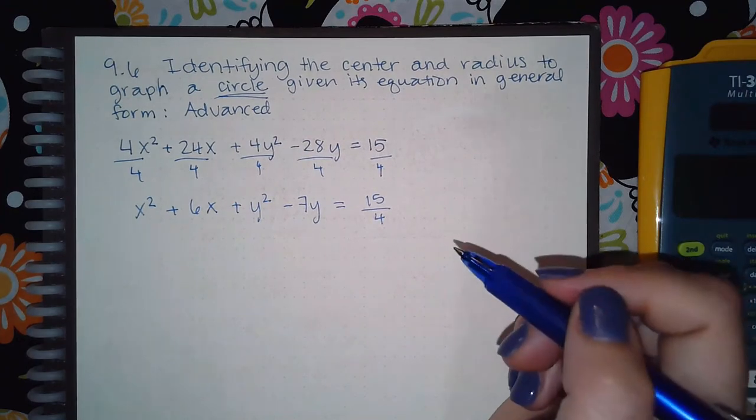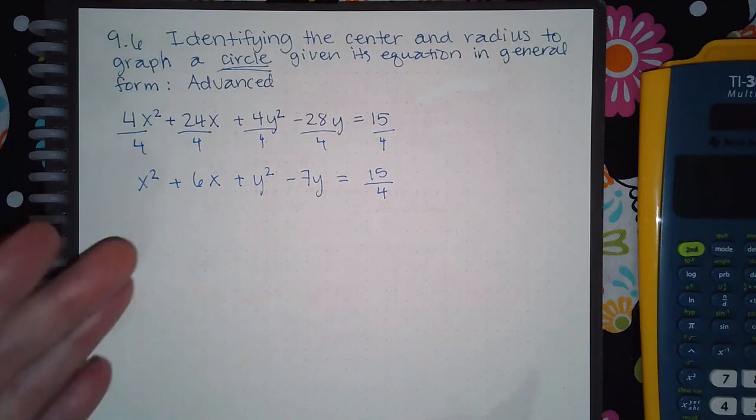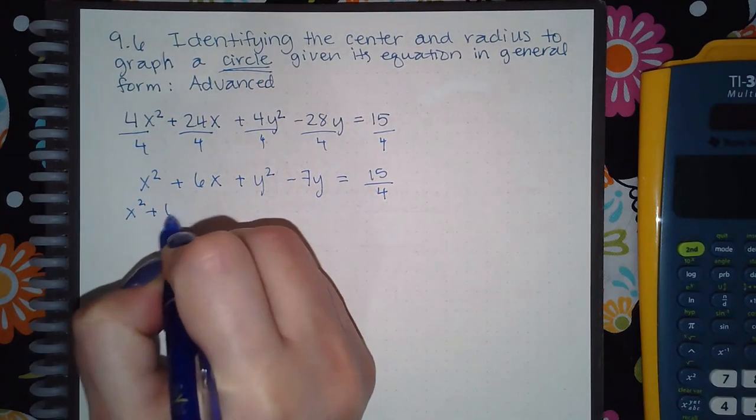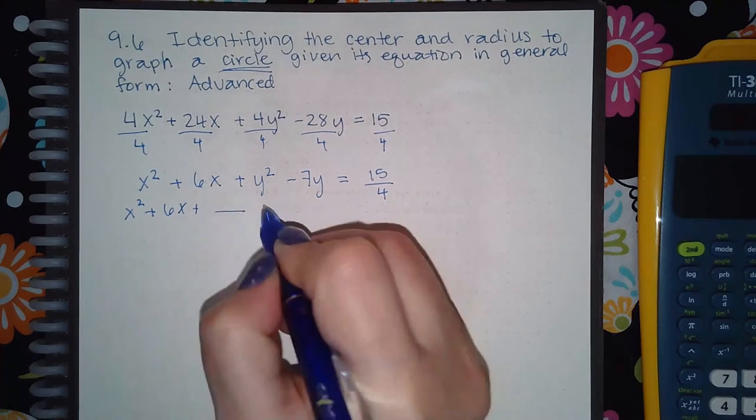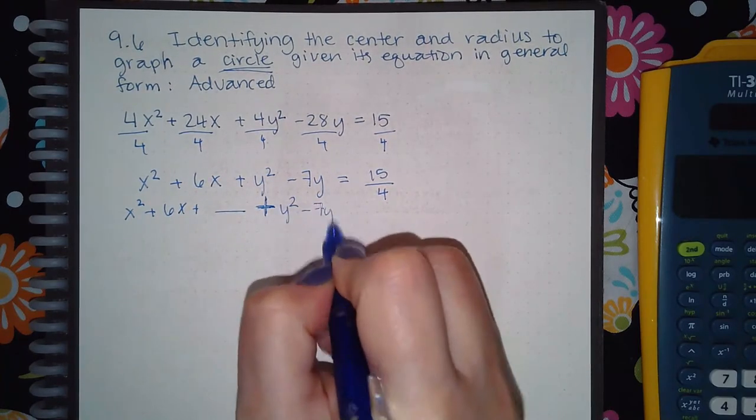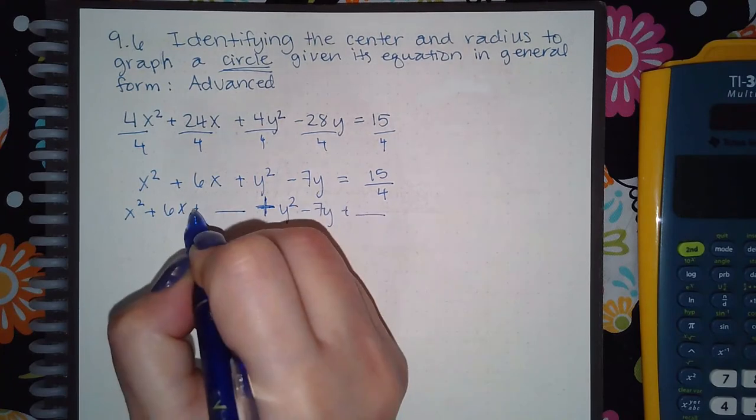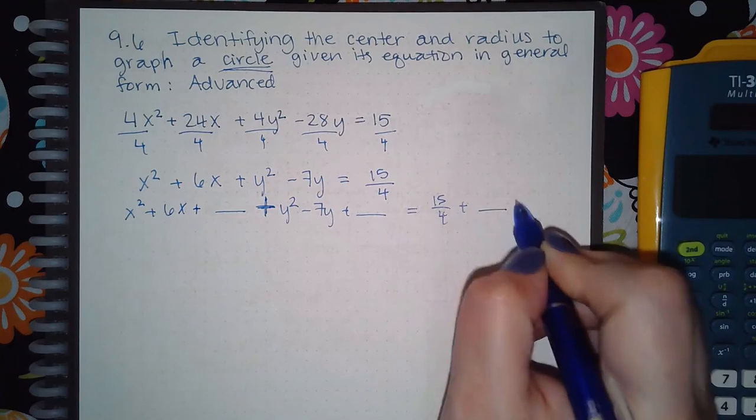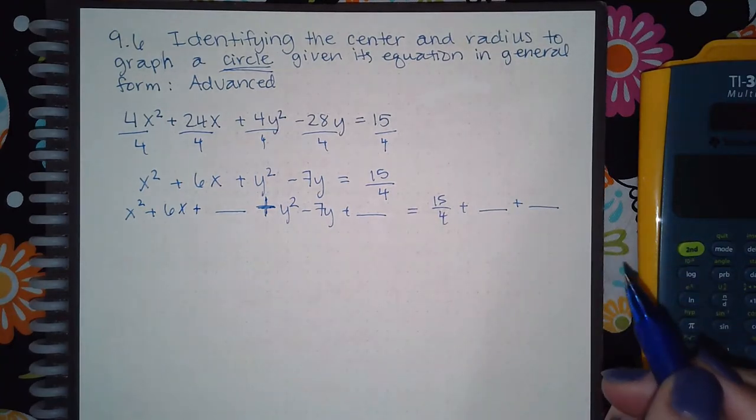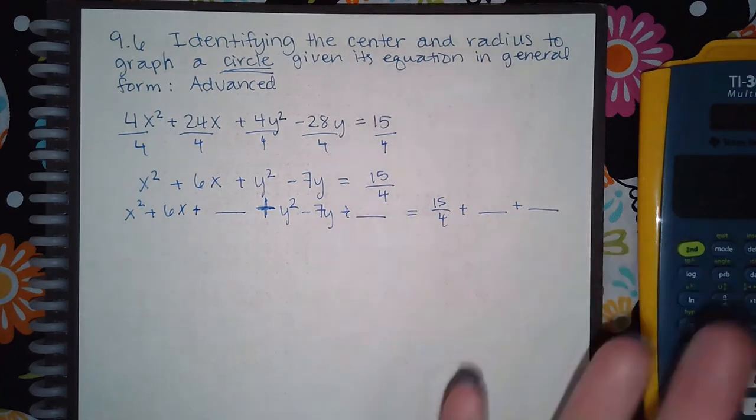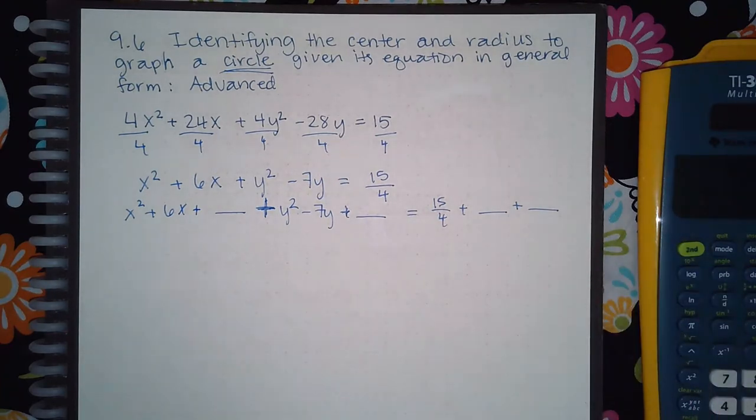Then I'm going to rearrange it, and it's actually already rearranged pretty nice. I'm just going to write it so that I can add those numbers I need to complete the square. Remember, whatever you add to the left side, you also have to add to the right side. That's how equations work to keep it equivalent—whatever you do to one side, you have to do to the other side.